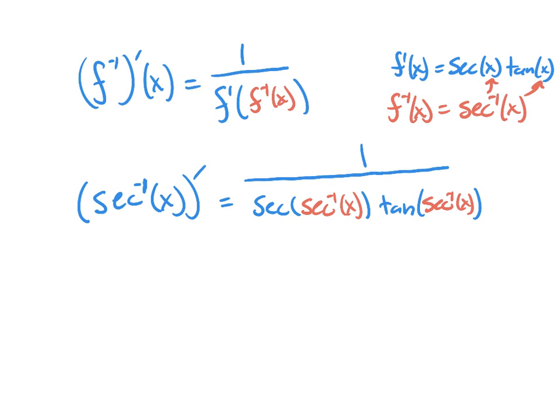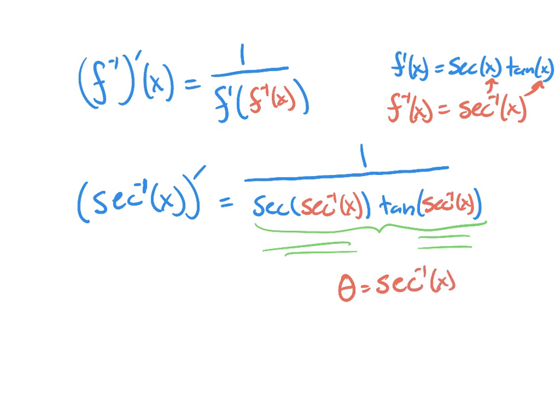We clean these up by simplifying the expression on the bottom, which means simplifying these two sub-expressions. This is where it gets interesting. I'll set up the basic triangle structure we use for this situation. Remember, inverse secant of x is just some angle, and we've been calling that theta. So we do a change of variables and say inverse secant of x is now called theta, then we start by drawing a triangle.